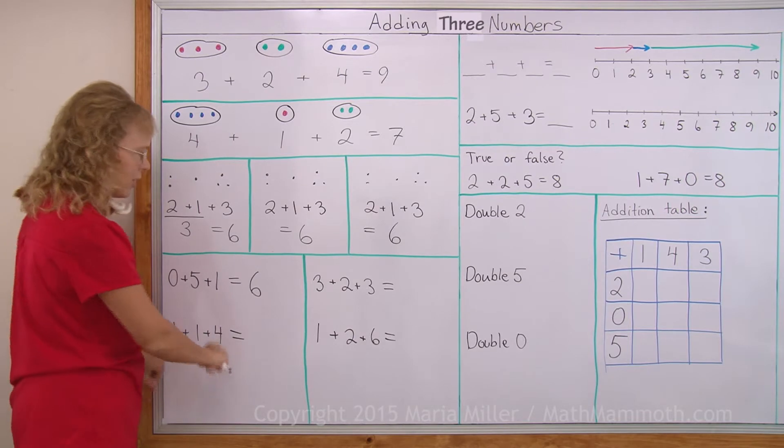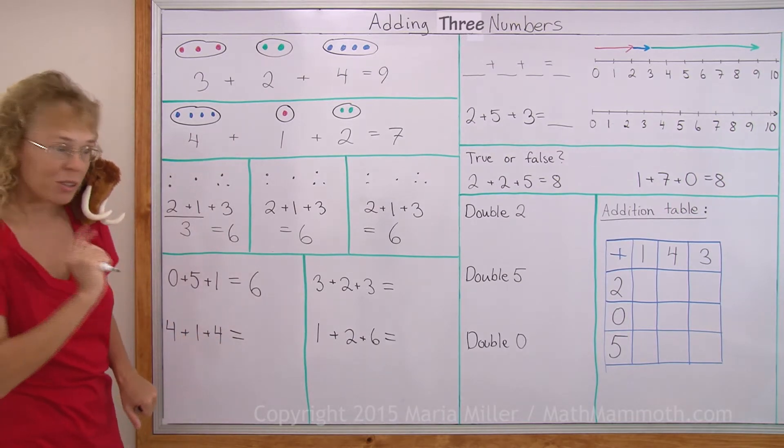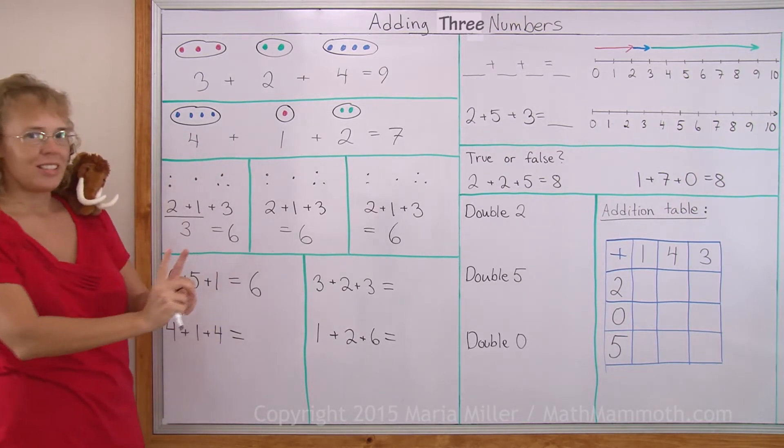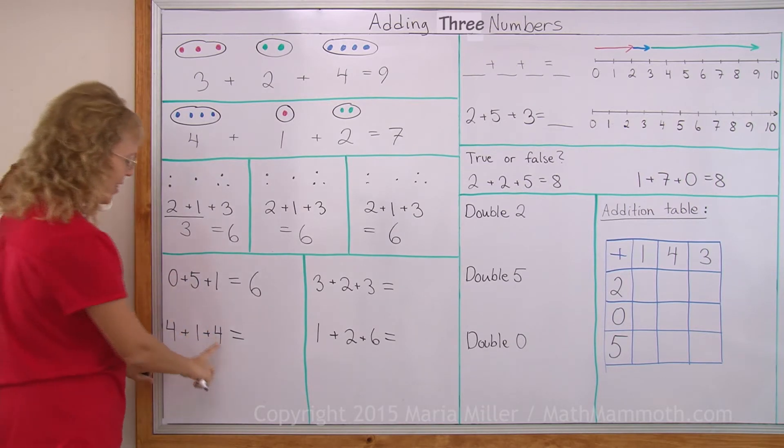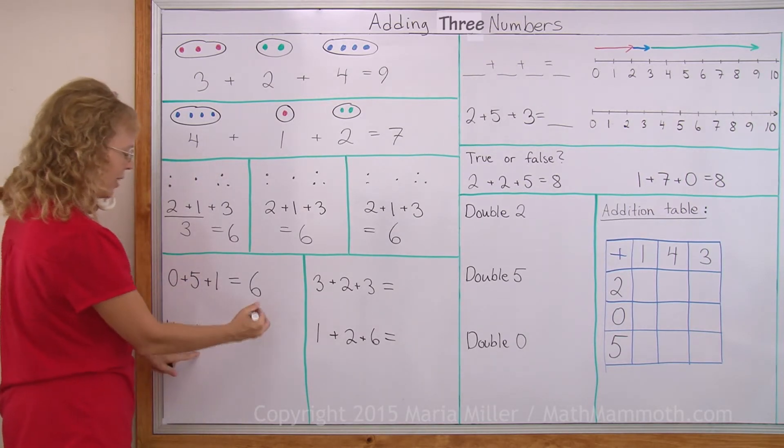Over here, four and one and four. I'm going to add four and four first. Four plus four, I remember that's eight. And then eight plus one makes nine.